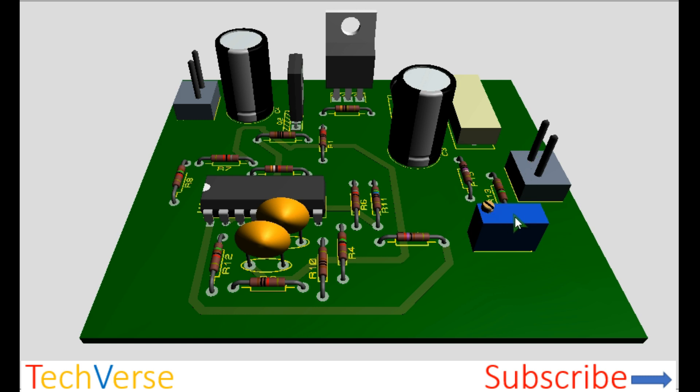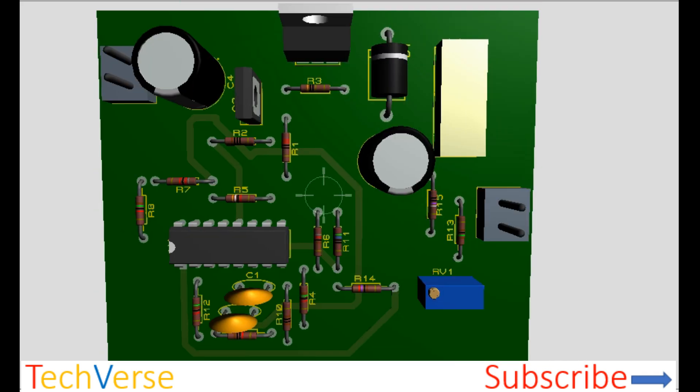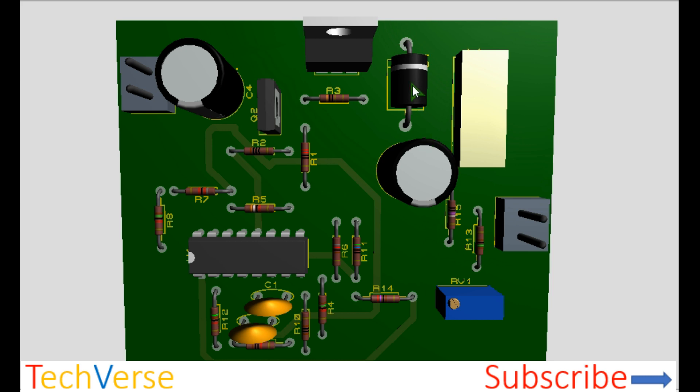This is the adjustable potentiometer for varying the output voltage. This is the IC and its biasing components. This is the driver transistor. This is the diode and this is the inductor.